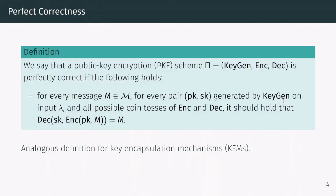Clearly, the first property that one wants from a public key encryption scheme is correctness. In its strongest variant, we would like to have that for every possible message M, the decryption of the encryption of M gives us M back. Of course, correctness alone is not sufficient — we want that such schemes are secure too.